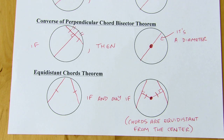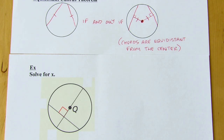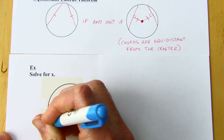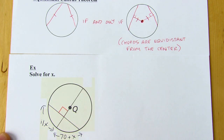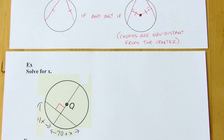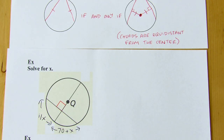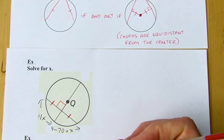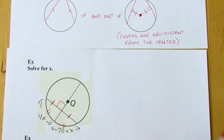That's the last of the theorems. Now let's try some examples. I'm putting in given info: one arc has length 11x and the other arc has length 70 plus x. We're solving for x using the theorems. I've got a diameter perpendicular to a chord, so I know it's going to bisect the arc. Therefore, I can set 11x equal to 70 plus x.